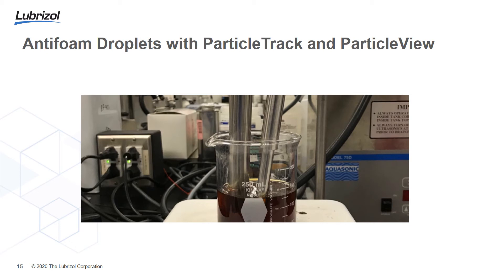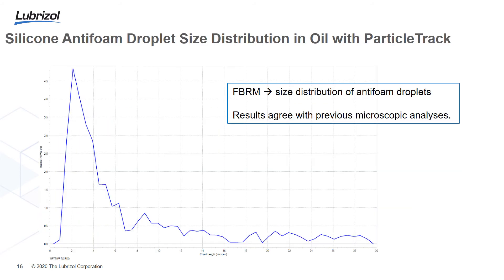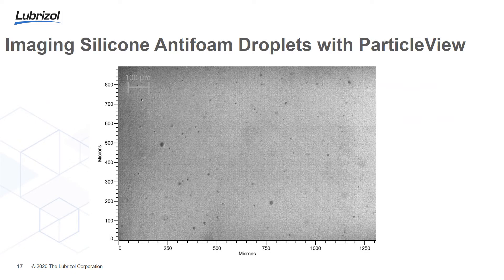Looking at a fully formulated gear oil with silicon anti-foam incorporated at less than 100 ppm concentration, ParticleTrack can measure size distribution around 2 micrometers and above under dynamic stirring conditions. These results agree with previous optical microscopic analysis measured under static conditions. ParticleView allows us to visualize those silicon anti-foam droplets under dynamic stirring conditions.